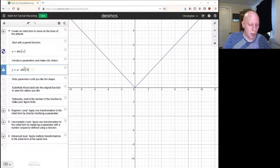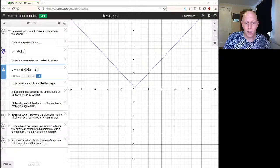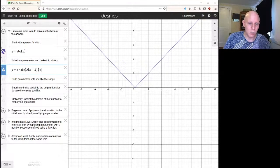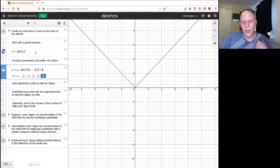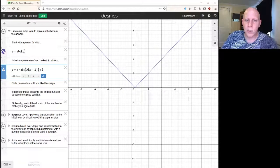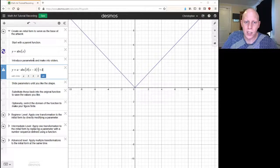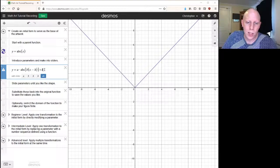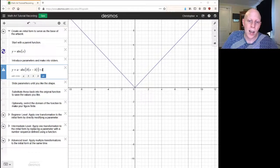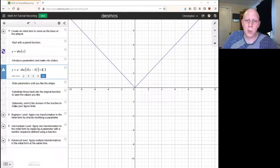We can also have a horizontal shift and a vertical shift. What we've done here is introduce plenty of parameters into this function. This now represents any transformation of the absolute value function.